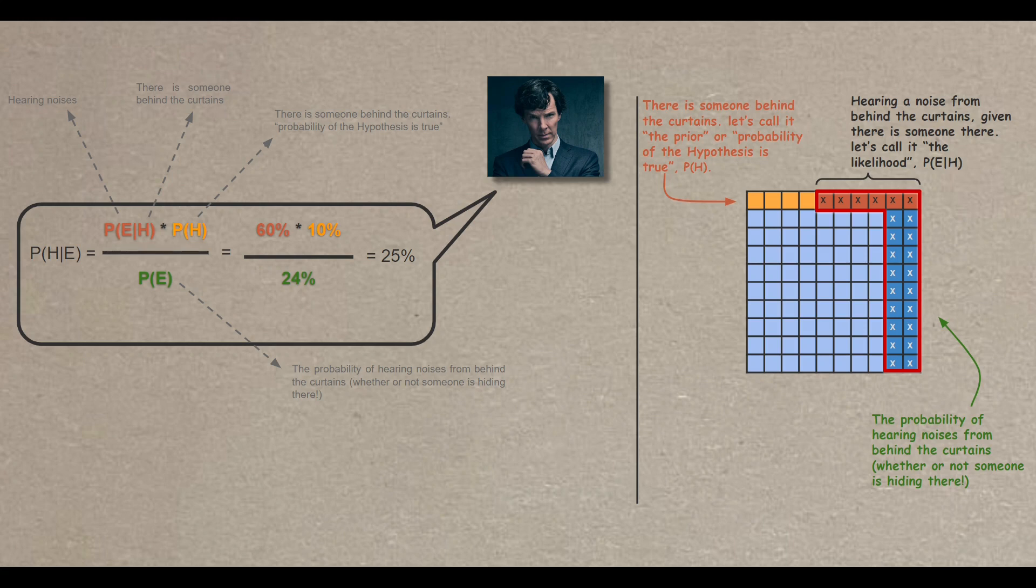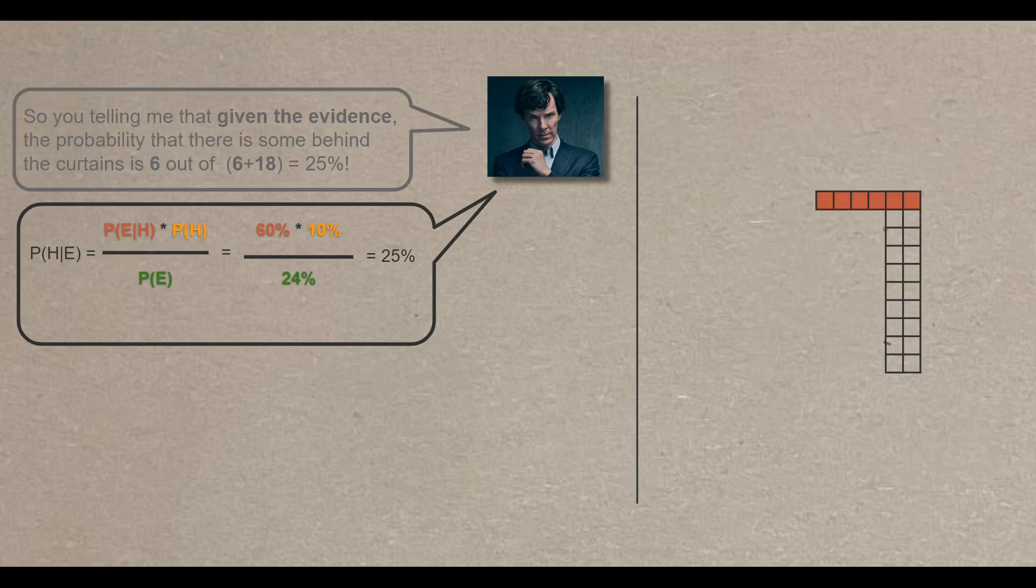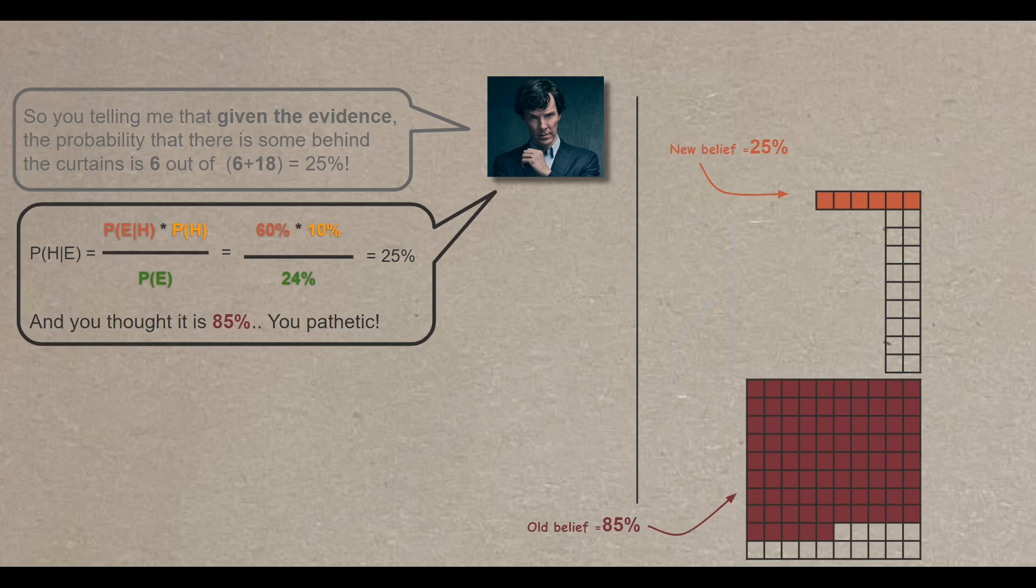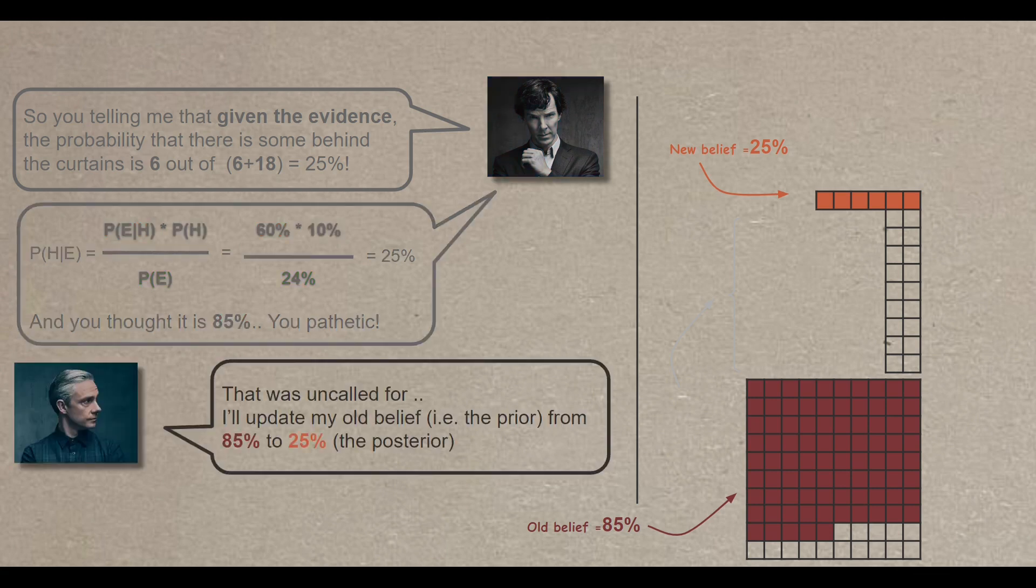And that translates to 25%. And as you can see, the denominator is the red area. So if we clip the red area, we end up with 6 orange squares out of 24 squares. And that's the 25%. And that's the new belief. 25% instead of 85%. Do you think Sherlock will let that slip? Of course not. So he says, And you thought it's 85%, you pathetic. That was uncalled for. I'll update my old belief, the prior, from 85% to 25%, the posterior.